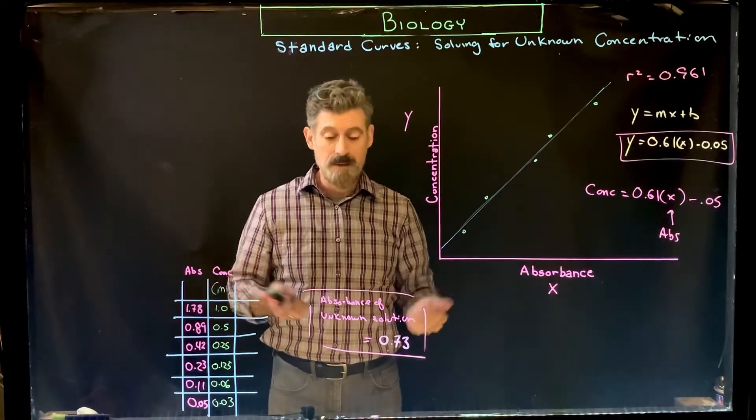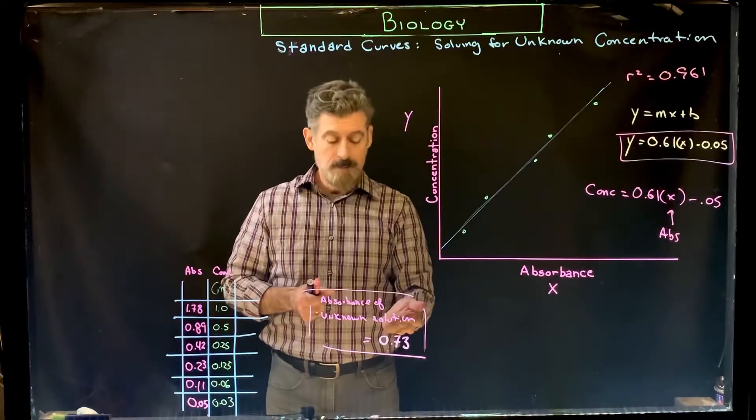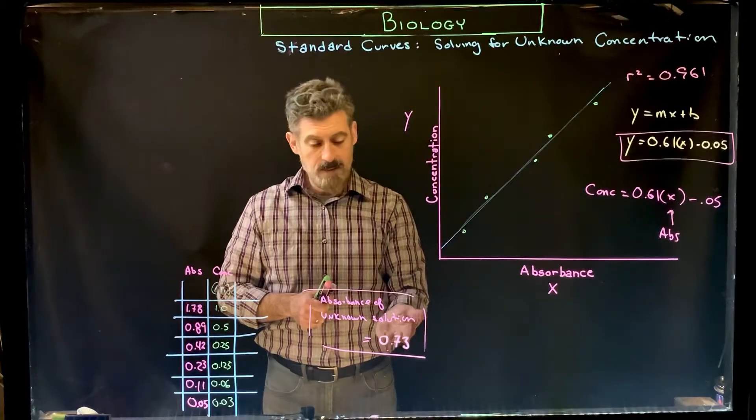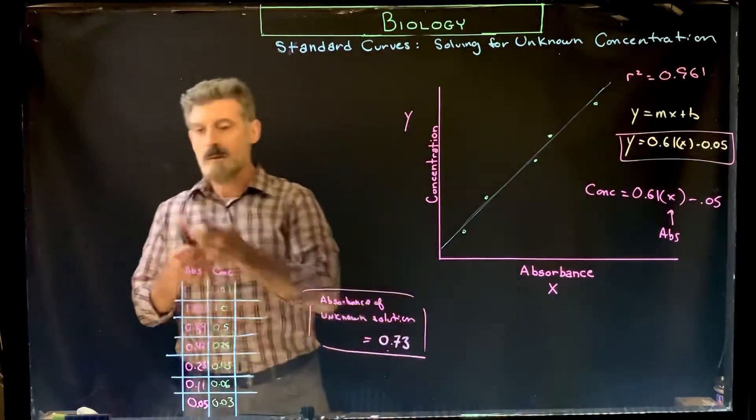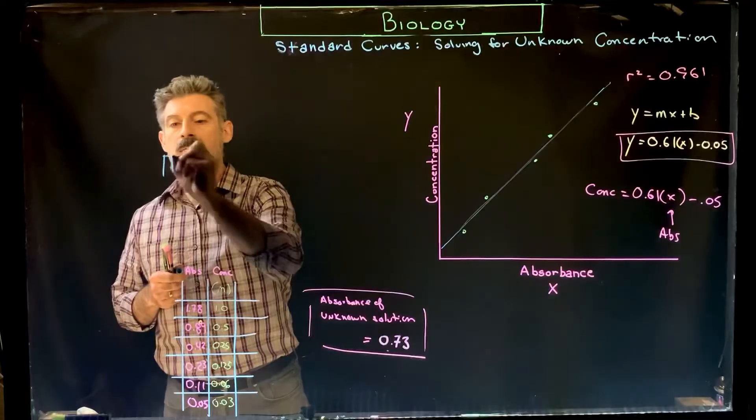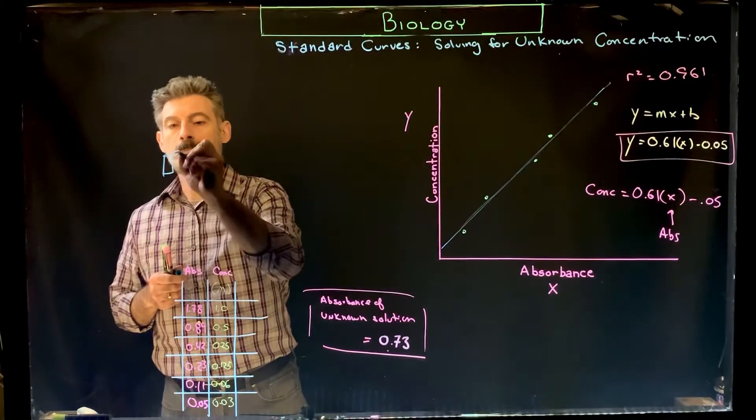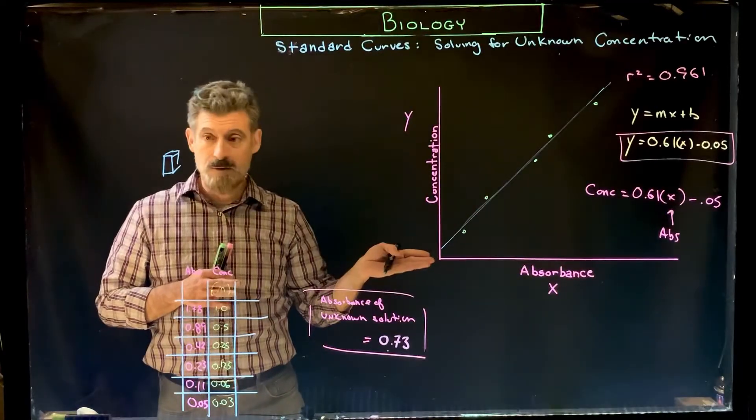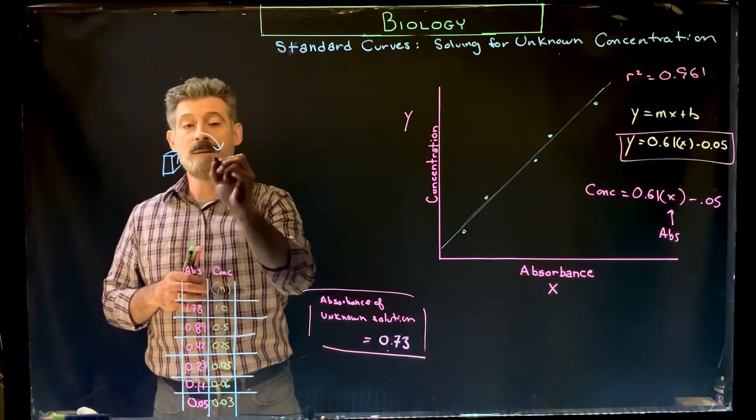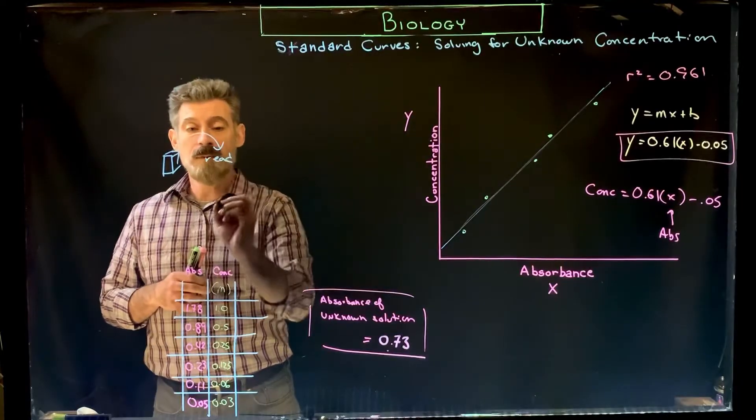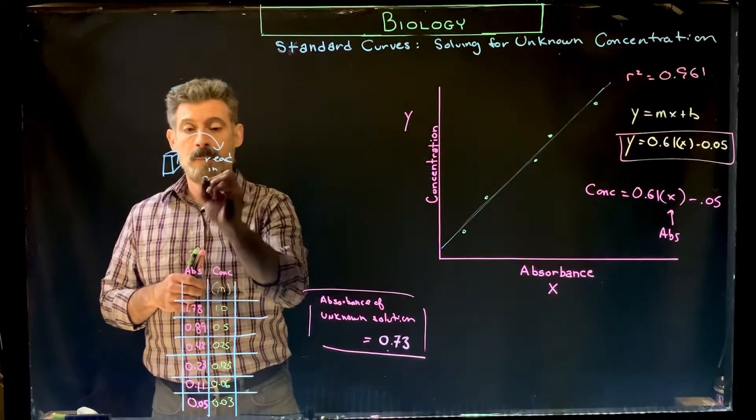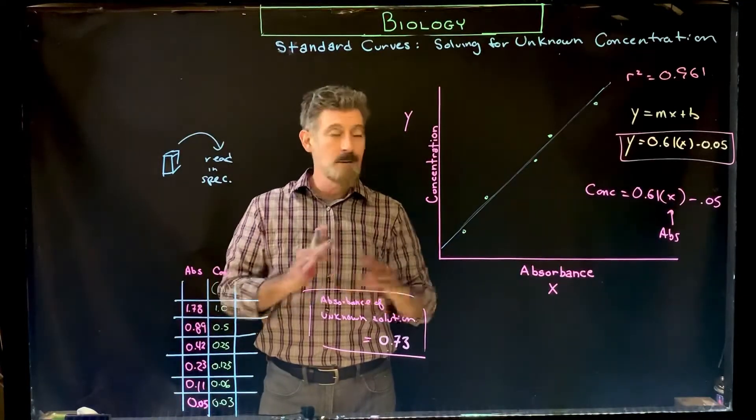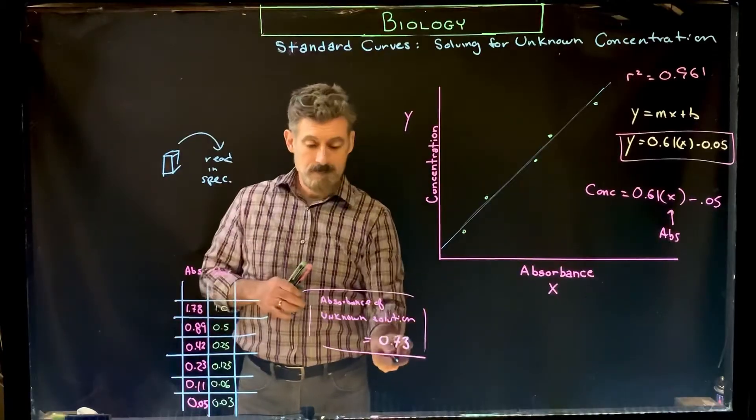This is the equation that's set up. What you would do is simply, you would say, okay, I have an unknown. I have a cuvette with your unknown sample in it. You would blank the machine with the same thing that you use to do your standard curve. Then you could take that absorbance and you read it in the spectrophotometer. That would have to be done at the exact same wavelength with the exact same blank. All these things have to be the same, but then you would get some value.